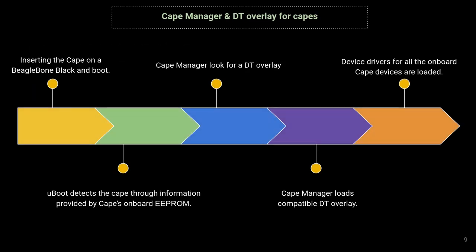Here is the internal working of the CAPE Manager and how it loads the device tree overlay for CAPEs. When we insert the CAPE on a BeagleBone Black and boot the board, U-Boot detects the CAPE through information provided by the CAPE's onboard EEPROM. The CAPE Manager looks for a compatible device tree overlay, then loads it, and finally the device drivers for all the onboard CAPE devices are loaded and the CAPE is working.